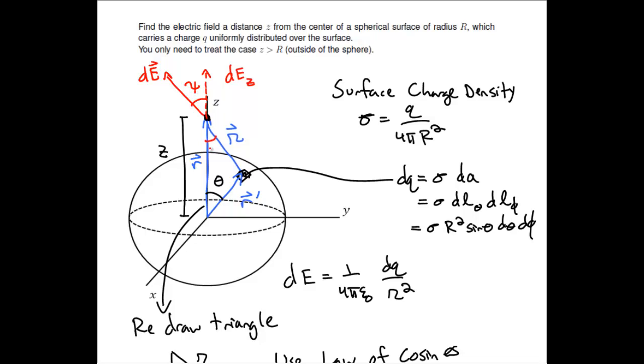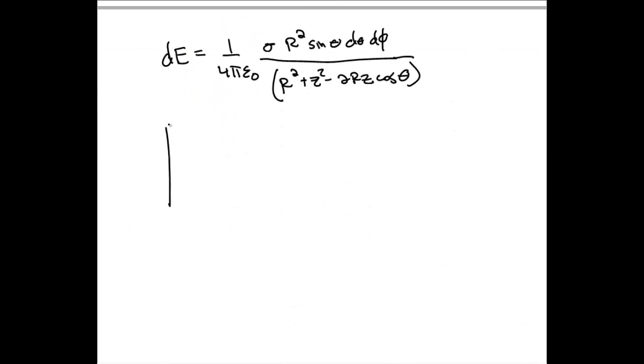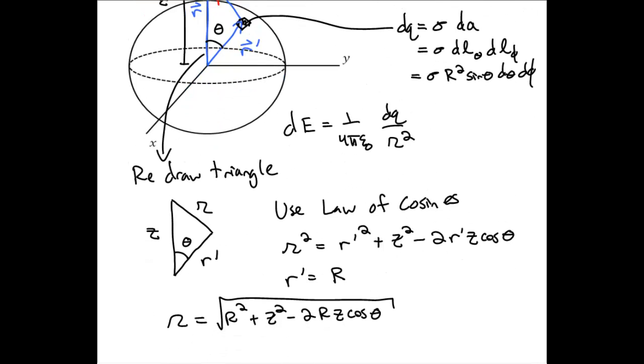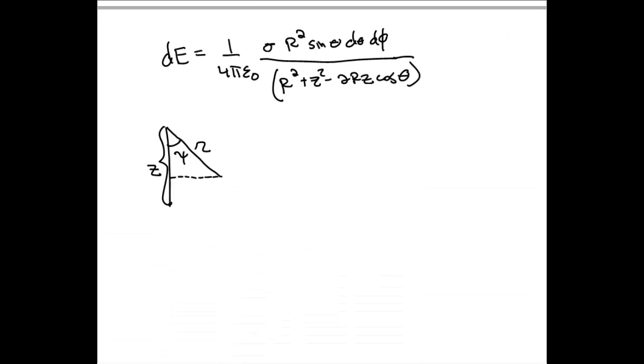We can identify that angle psi as being the same angle psi inside of our triangle here. And so we can redraw our triangle to make this a little bit easier. Looking at our triangle and looking at our picture above, we see that we could figure out psi if we could just figure out the length of this little bit of triangle outlined in blue. And then we could use, say, a cosine.